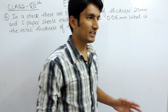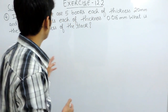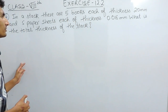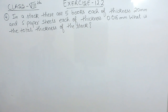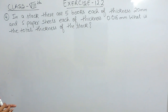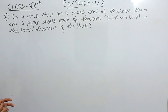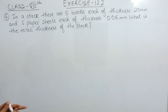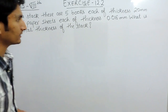Hello everyone. In this video we are going to solve question number 4 of exercise 12.2. In this question it is given that in a stack there are 5 books each of thickness 20 millimeters and 5 paper sheets each of thickness 0.016 millimeters. What is the total thickness of the stack?